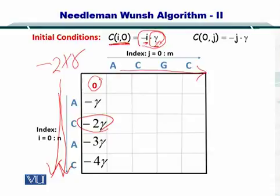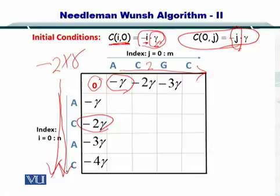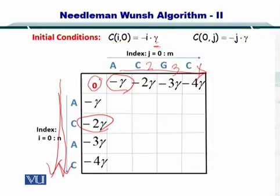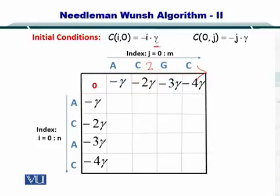Similarly, for this axis, we continue using the same initial condition but j is the index that is used. So minus 1 gamma, now j is 2, so minus 2 gamma. Here j is 3, so minus 3 gamma and here j is 4, therefore minus 4 gamma. So in this way you have computed the initial conditions for the entire matrix and now you have the first row which is filled, you have the first column that is filled.